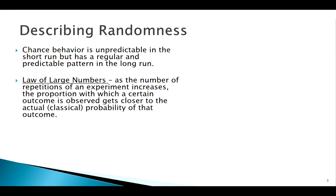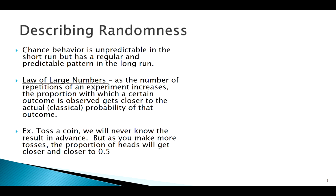Basically, what the law of large numbers says is: the more I repeat a process, the closer my results should be to what I'm expecting. For example, if I toss a coin, we know theoretically 50% of the time I should get heads and 50% tails. If I toss it once or twice, I can't predict the outcome for sure. But if I toss a coin a million times, I'd be willing to bet I get pretty close to half heads and half tails. Probabilities need time to work themselves out.